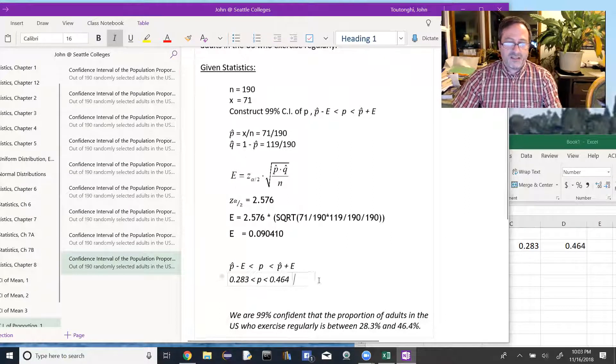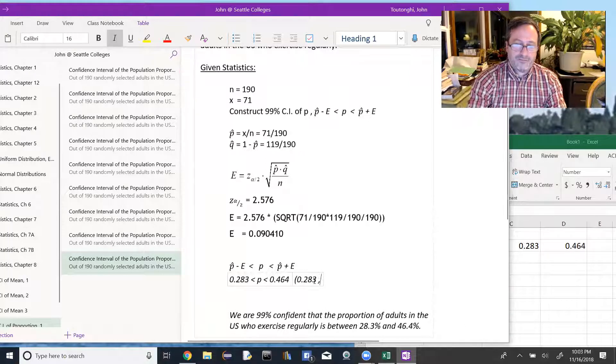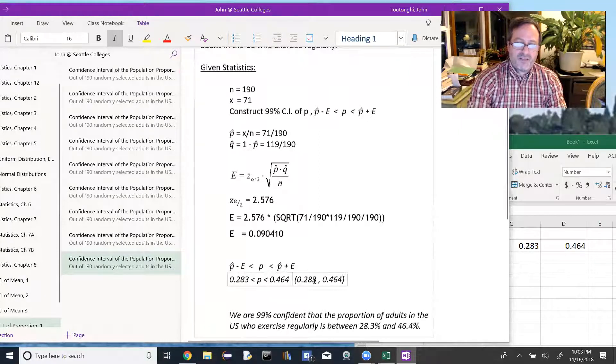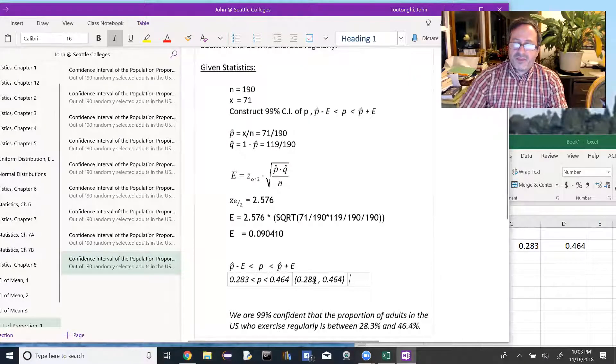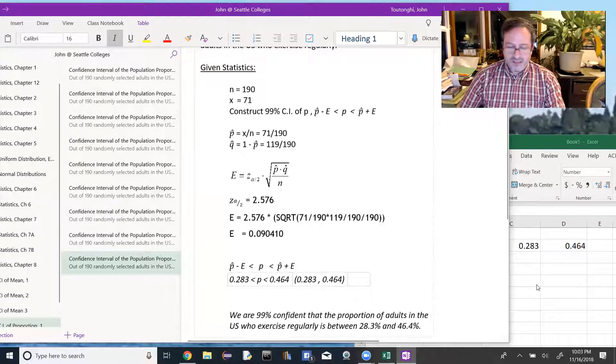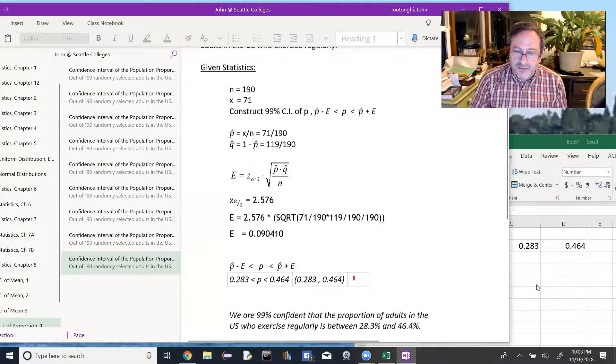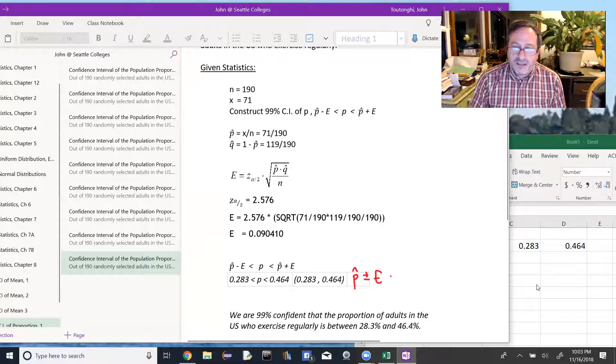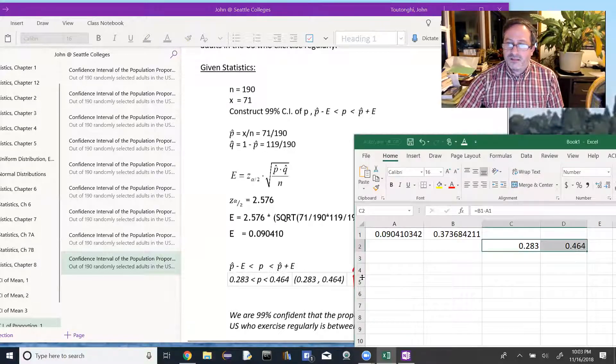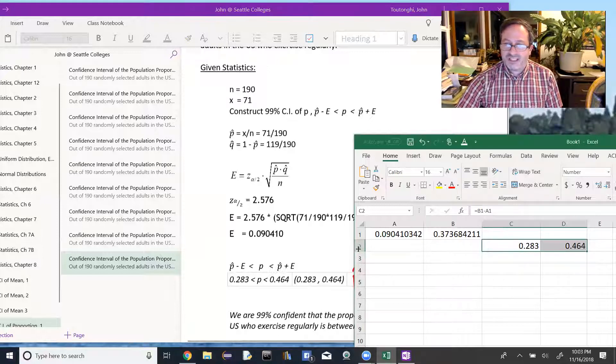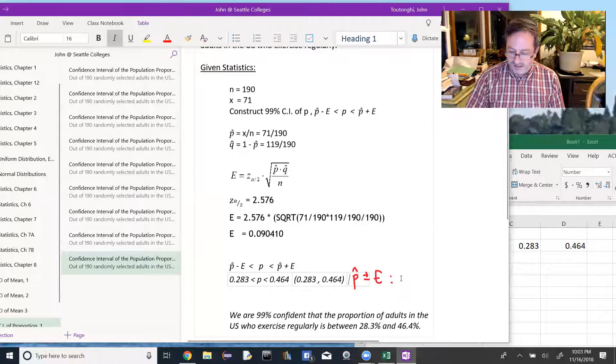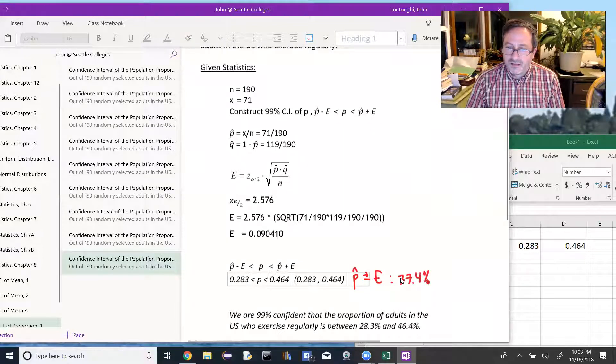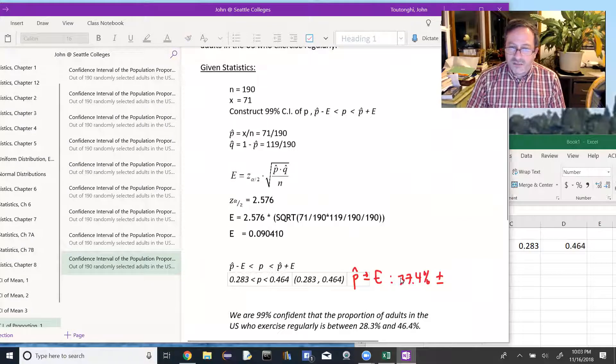Now I could write this using these other notations. That would be the actual interval, or I could write it as p-hat plus or minus. p-hat is 37.4%, so 37.4%, and then it'd be plus or minus the error, which was 9.0%.